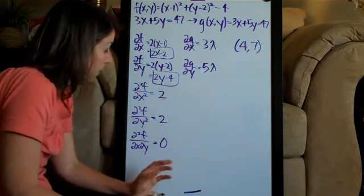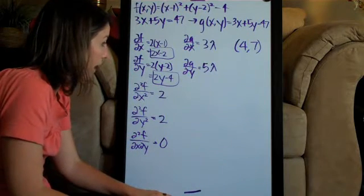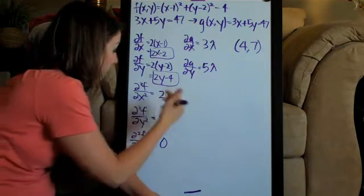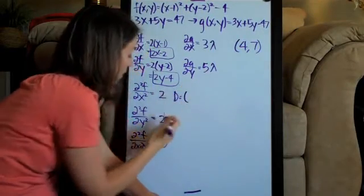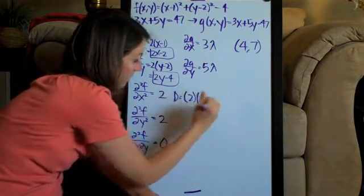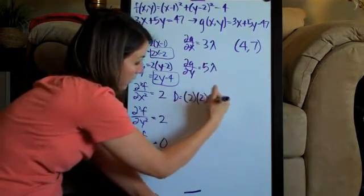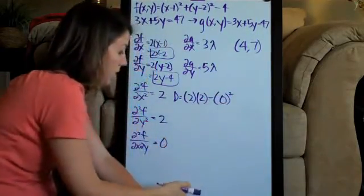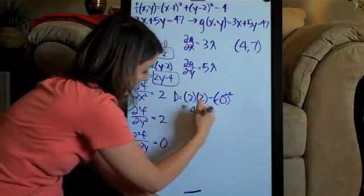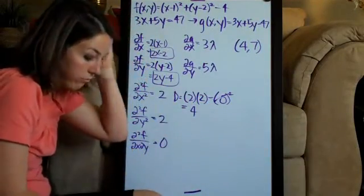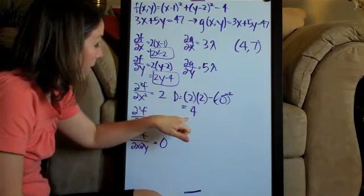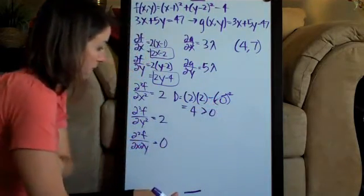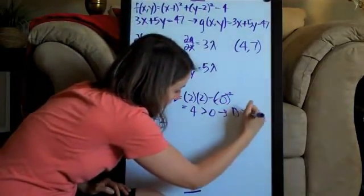Now that we have all three second-order partial derivatives, we apply the D-test. D equals the second-order partial derivative with respect to x times the second-order partial derivative with respect to y, minus the mixed second-order partial derivative squared. Since the mixed partial is zero, D is just 2 × 2 = 4. Since D is greater than zero, we proceed to the next step.